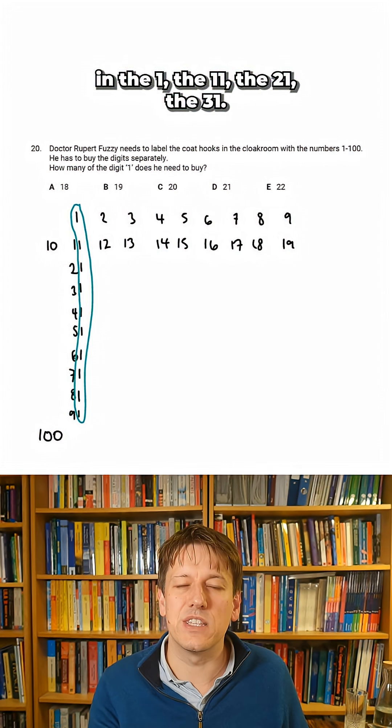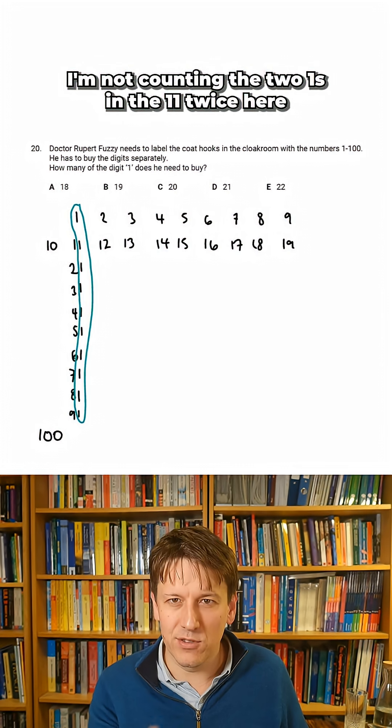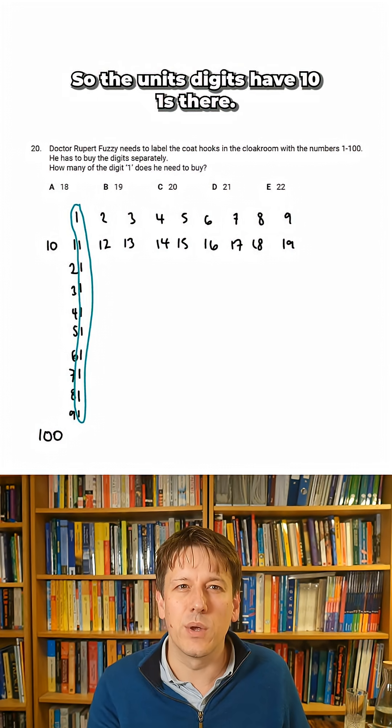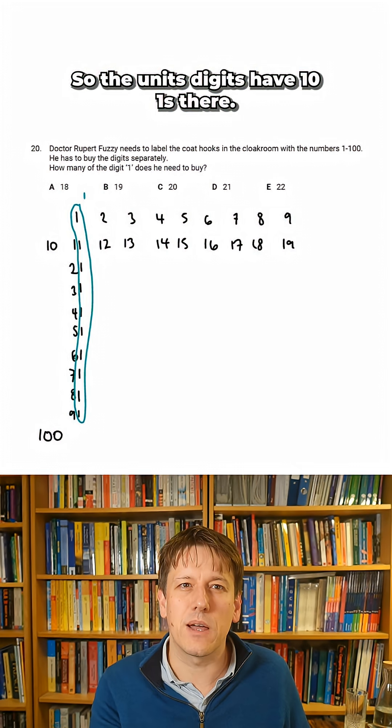I know there are 10 1s in the tens digits, right? In the 1, the 11, the 21, the 31. I'm not counting the 2 1s in the 11 twice here yet, just once. I'm just counting the 1s in the units digits. So the units digits have 10 1s there.